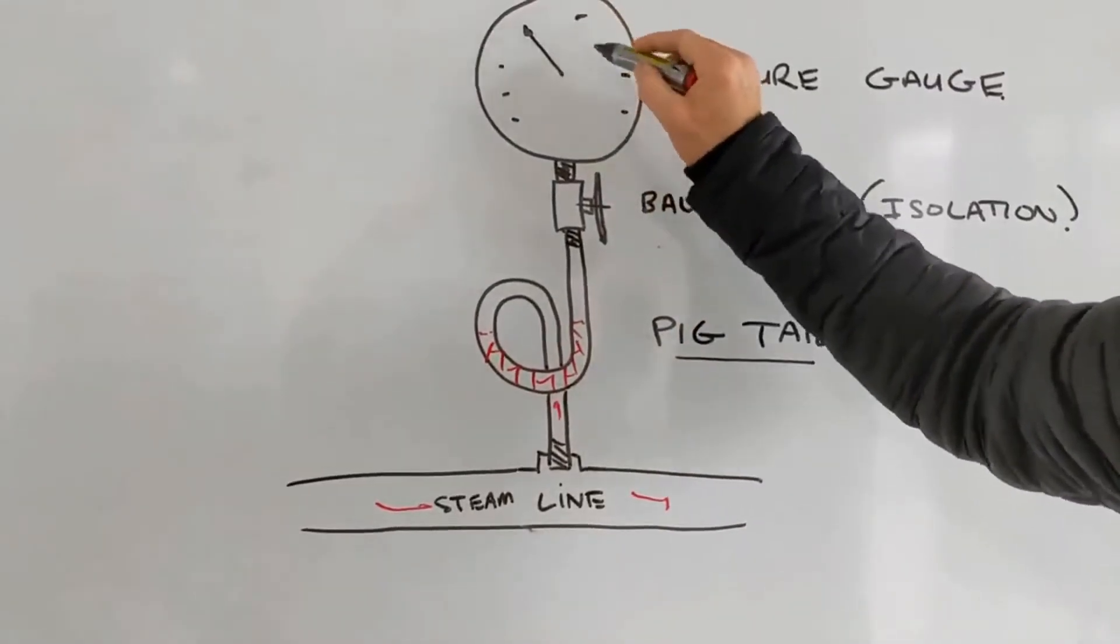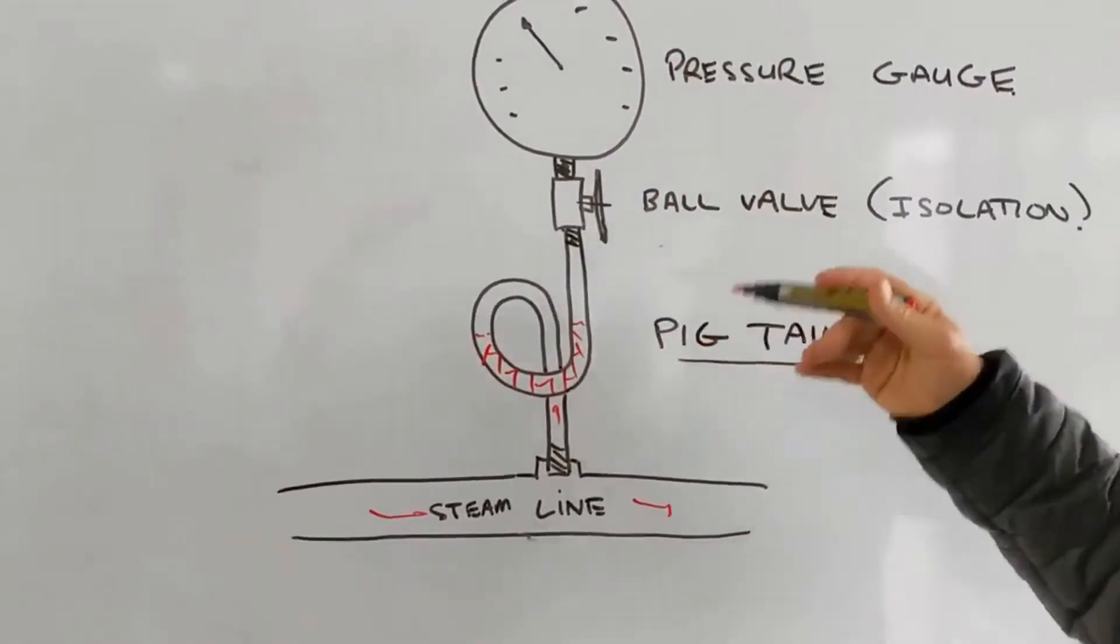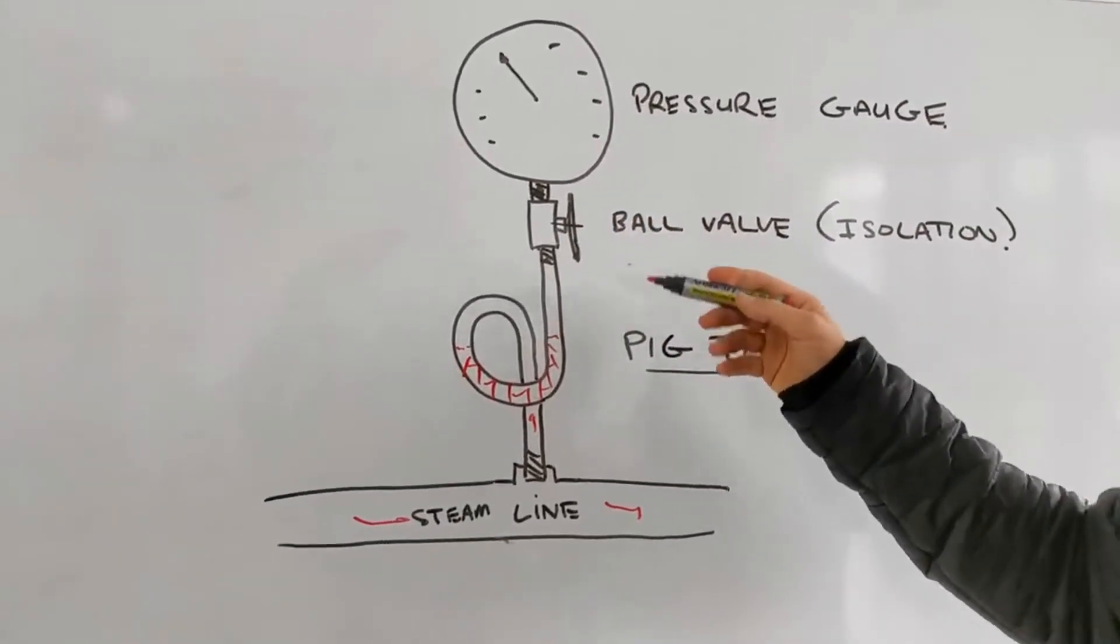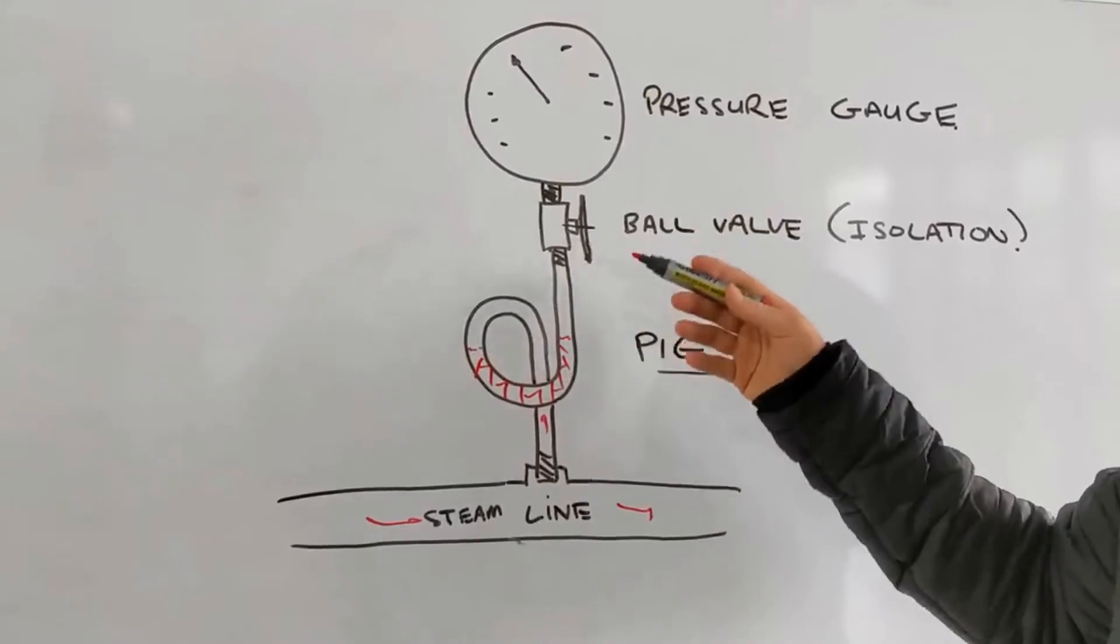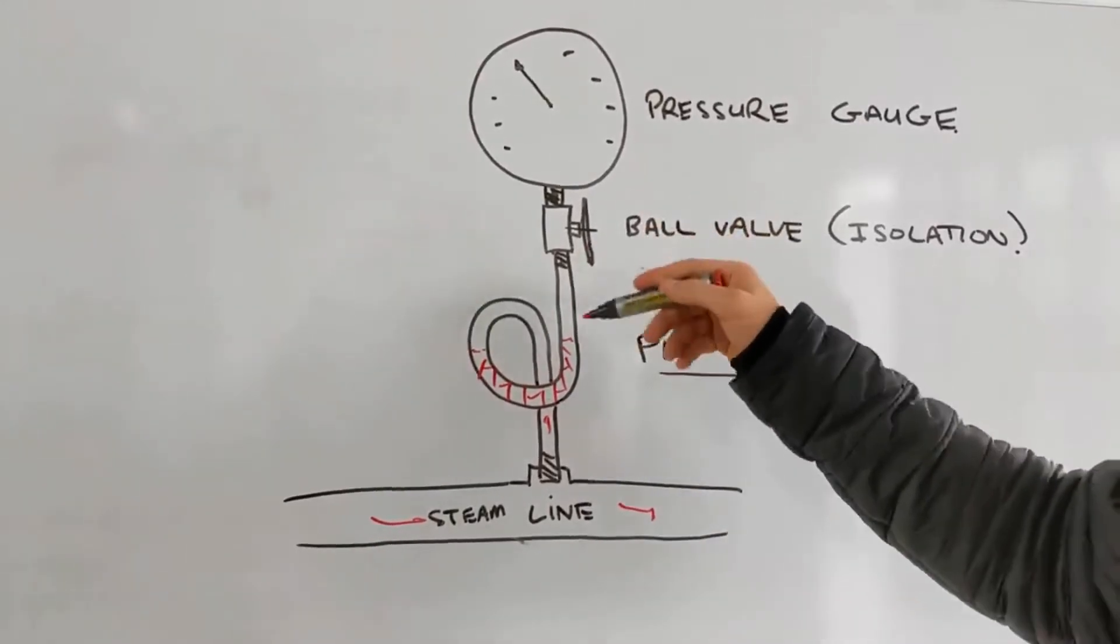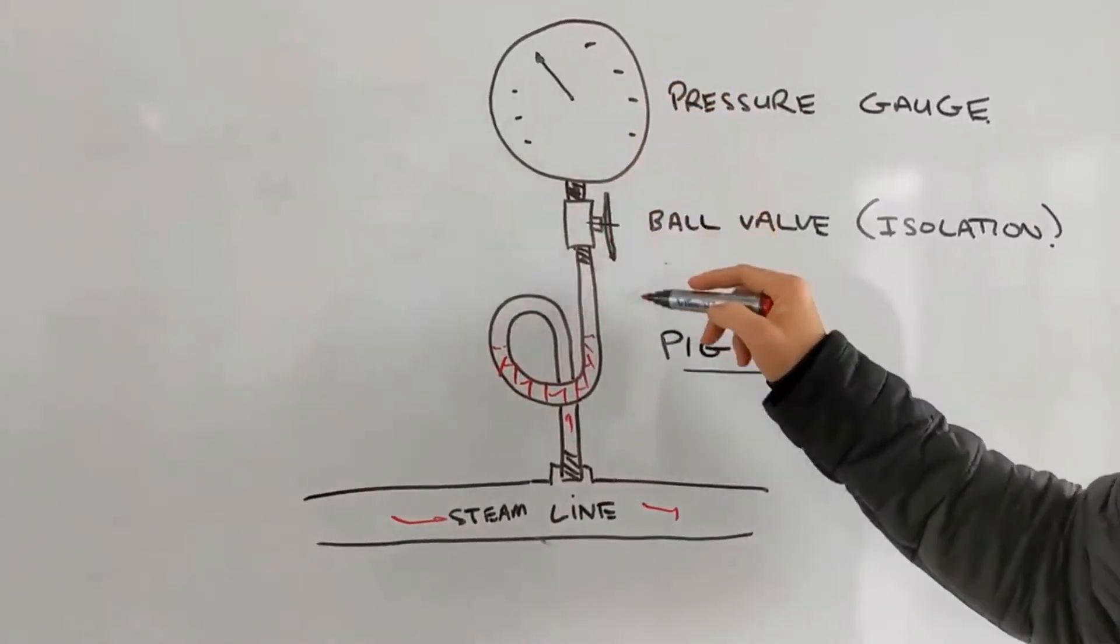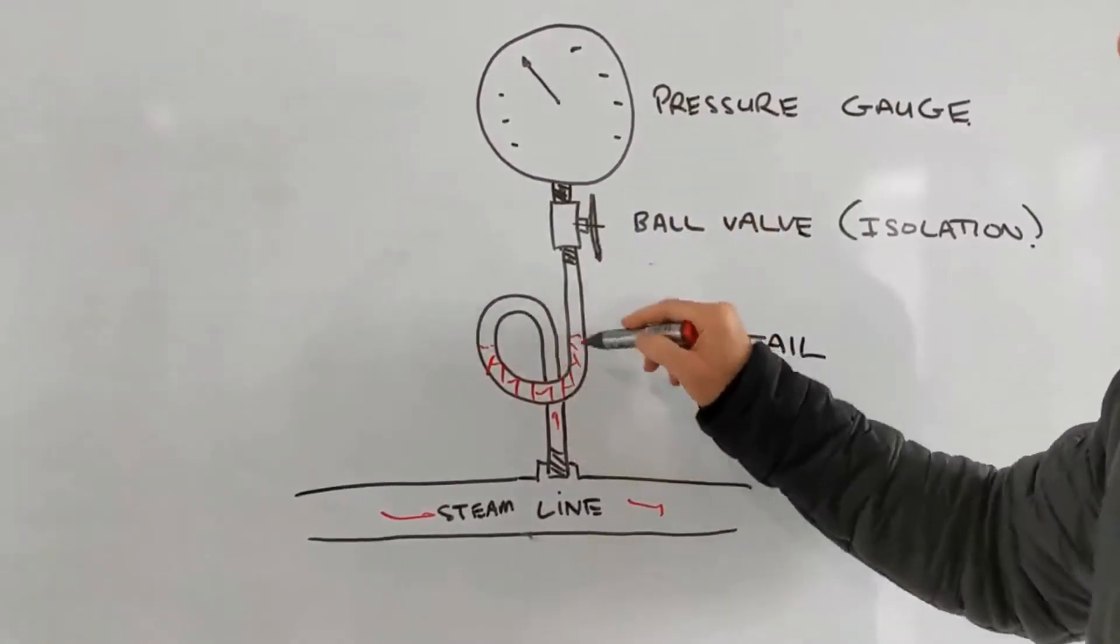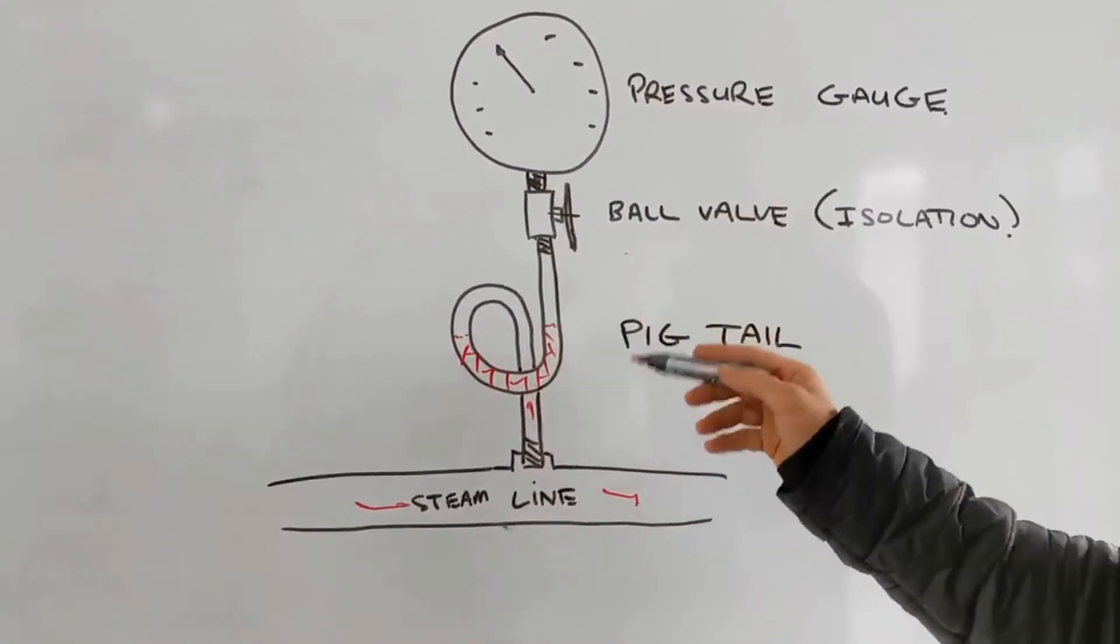You may wonder why we have a ball valve here. There's two reasons: first, you can isolate it so if you're not using the gauge you don't have to keep it on all the time, which will protect the gauge further. And if you ever need to change the gauge out - because this pigtail siphon has no moving parts, it will last a very long time - chances are your gauge will fail before it.